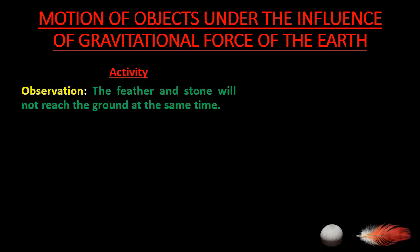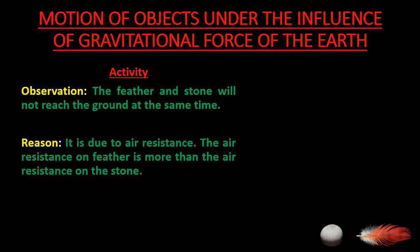What we observe is that the feather and the stone will not reach the ground at the same time — the feather will reach a little later. The reason is air resistance, which is the force that opposes the motion of an object as it passes through air. In this case, the air resistance on the feather is more than on the stone, so the stone reaches earlier and the feather reaches a little later. This made people wonder: what would happen if there were no air?